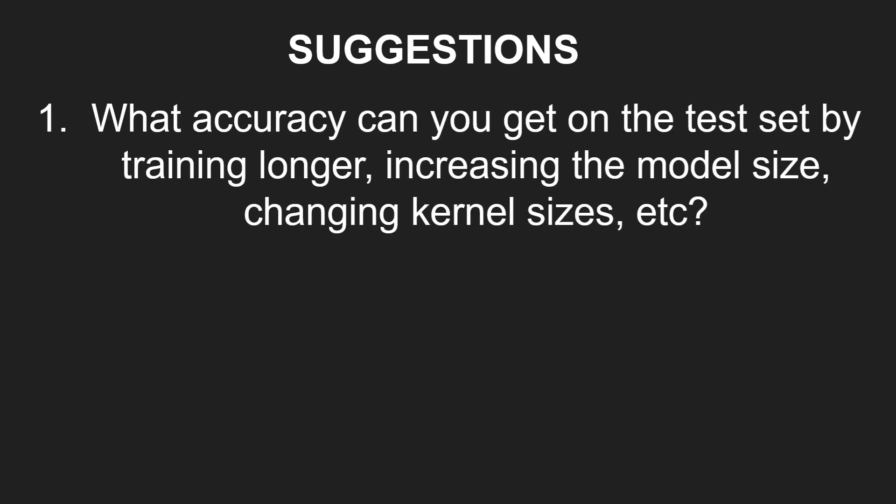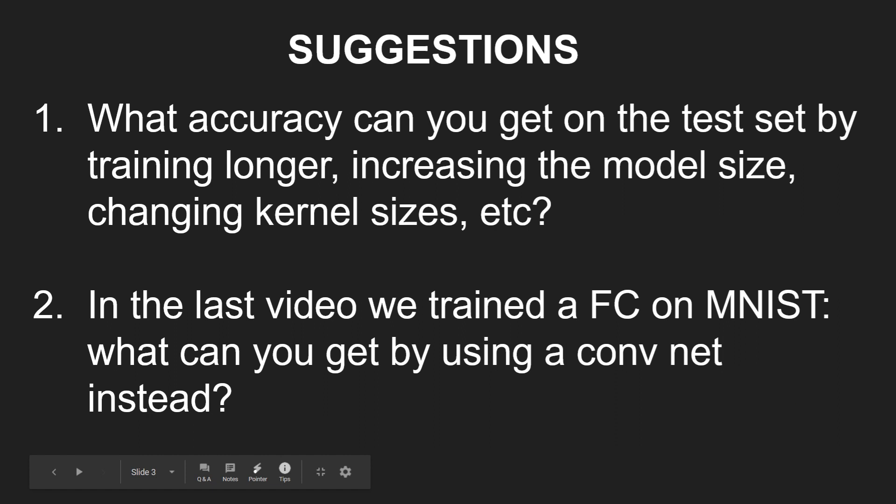When a model overfits we need to use regularization, which we'll cover in the next video to close the gap between training and test accuracy. A couple of suggestions: check what accuracy you can get by training longer, increasing model size, changing kernel sizes, or playing with padding. Also try training a ConvNet on MNIST instead of a fully connected network. That's it for this video — you saw how to train a CNN using both the Sequential and Functional API. Leave questions in the comments, and see you in the next one!